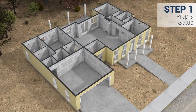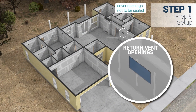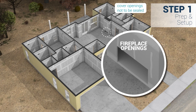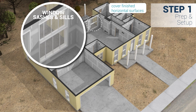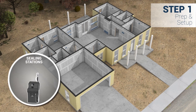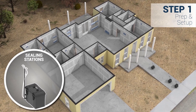The AeroBarrier process begins with covering all intended openings and horizontal surfaces to prevent the sealant from reaching unwanted areas. Once covered, the sprayer units are positioned strategically throughout the space.